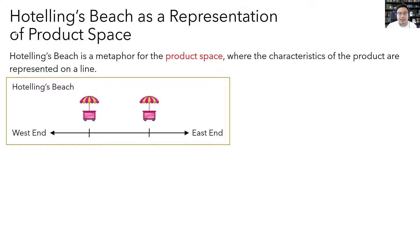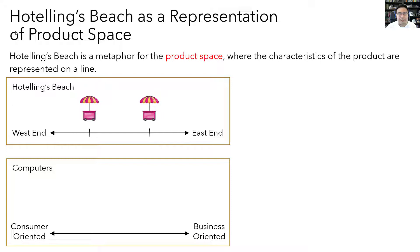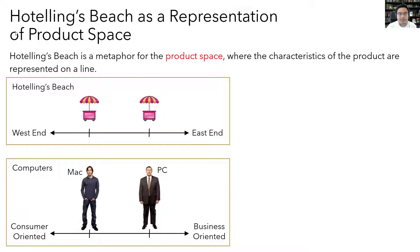Hotelling's Beach is kind of a silly example, but it's actually a metaphor for what's called the product space — a representation of the characteristics of different products on a line. In Hotelling's Beach, the main characteristic that mattered is the location of the ice cream cart and whether it's closer to the west end or east end of the beach. But we can think of the product space with other characteristics as well. In the market for personal computers, we can represent the products on a line with the defining characteristic being whether it's more oriented towards consumer use — playing games, browsing the internet, or watching videos — or for use by businesses running productivity software. Does anyone recognize these two guys? They're from a pretty funny line of commercials for the Mac that ran from 2006 to 2009.